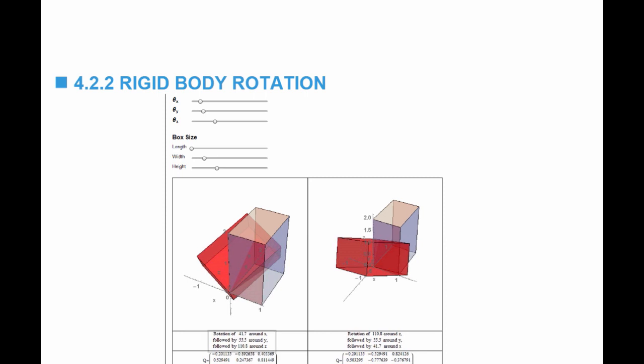Notice that the order of rotation is important. If you rotate an object by theta x, then by theta y, then by theta z, this is different from rotating first by theta z, then by theta y, then by theta x, where theta x is a rotation around x, theta y is a rotation around y, and theta z is a rotation around z. The tool shows you the difference, and underneath each figure you will find the order of rotation.